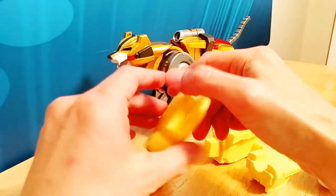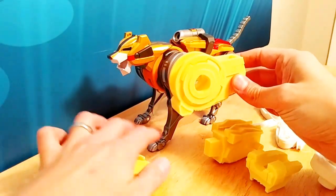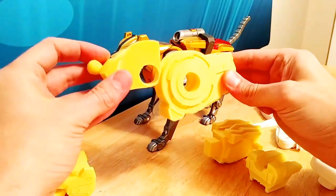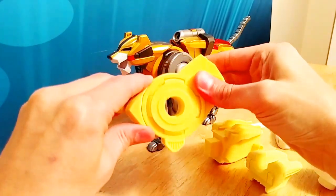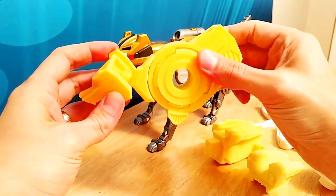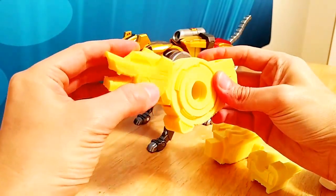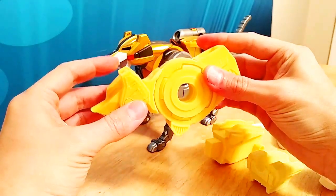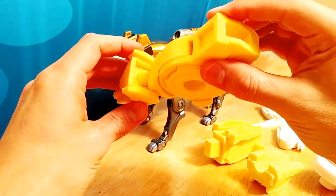This ends up being the torso part. This is going to be the neck piece. See how it's going to rotate in there. And then they're going to get the ball joint for the head. See how that fits together.